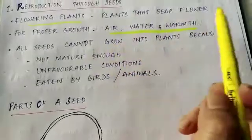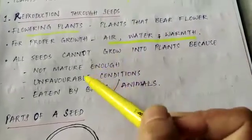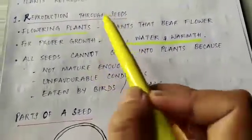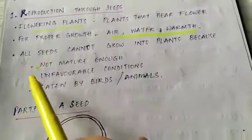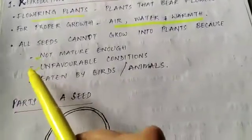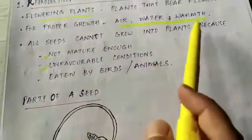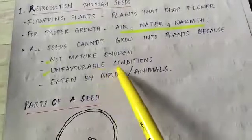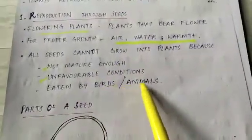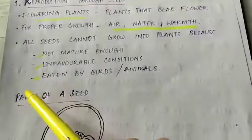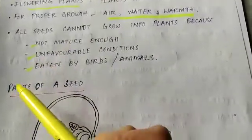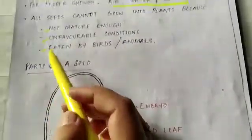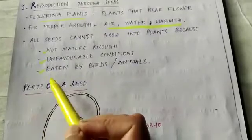Now, all seeds cannot grow successfully into a plant because there are certain things because of which they cannot grow successfully. That is, if they are not mature enough to grow, or some do not get all the favorable conditions like air, water and warmth — all the seeds do not get equally all these things. So due to unfavorable conditions, they cannot grow. Some are eaten by birds and animals. Birds and animals enter the field or pick up the seeds, and because of that, those seeds cannot grow into plants. So these are the different reasons why a seed cannot grow successfully into a plant.